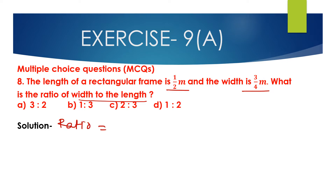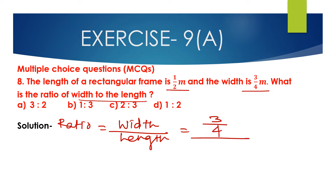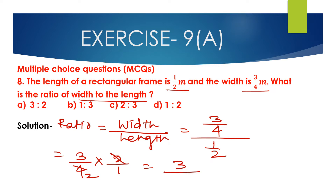So, ratio of width to that of length. Width divided by length: width is 3/4 and length is 1/2. So 3/4 divided by 1/2, which equals 3/4 multiplied by 2/1. Canceling 2 and 4 — 2 multiplied by 2 is 4 — we get 3/2, that is 3 is to 2.